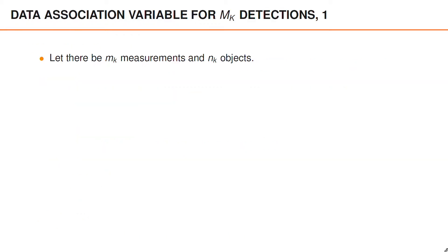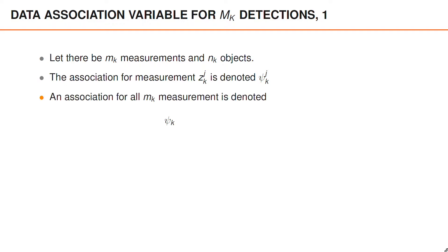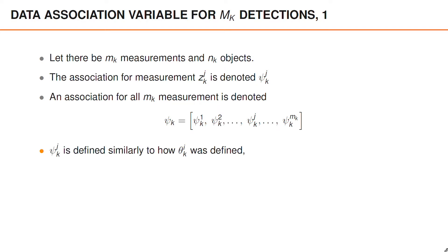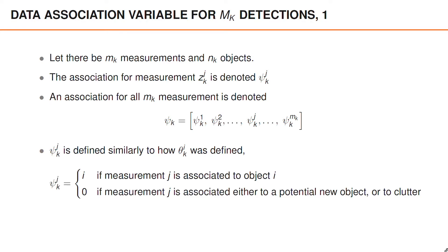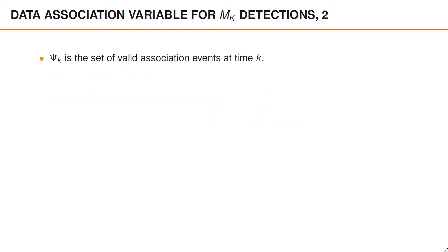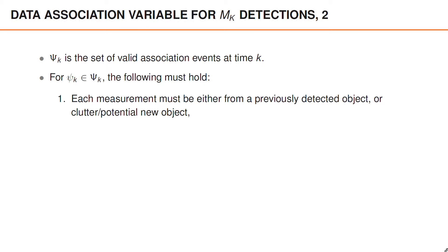The association for measurement j is denoted ψ with superindex j. An association for all m_k measurements is denoted ψ and is defined as the vector of measurement associations ψ^1 to ψ^m. ψ^j is defined similarly to how θ_i was defined. So ψ^j equals i if measurement j is associated to object i, and ψ^j equals zero if measurement j is associated either to a potential new object or to clutter. Bold capital Ψ denotes the set of valid measurement associations ψ. For a measurement association ψ to belong to the set of valid associations, the following must hold: each measurement must be either from a previously detected object or from clutter or a potential new object.